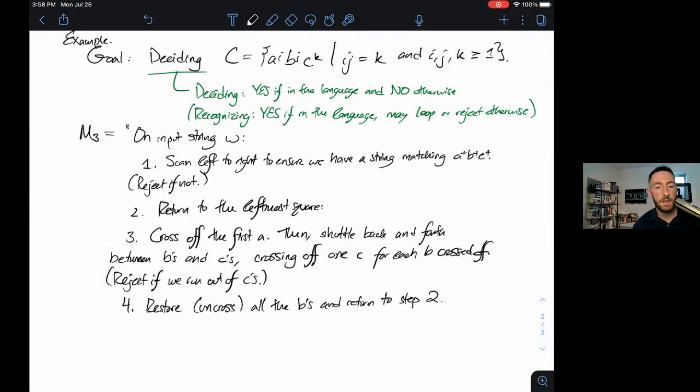In other words, we're going to cross off the same number of B's and C's. Then we'll uncross all the B's, go back to step two, which takes us back to the left-hand square, cross off another A, and do it again. Which means we're going to cross off, if there are J B's, we're going to cross off J C's, I many times. In other words, we'll cross off IJ C's. Once all A's are crossed, accept if no C's remain uncrossed.